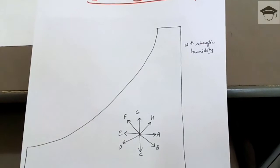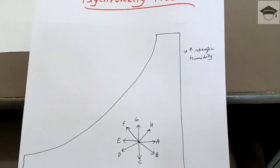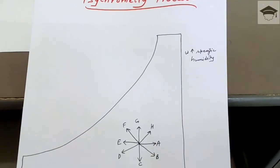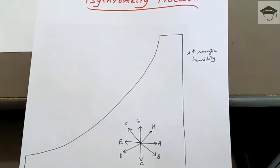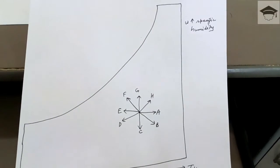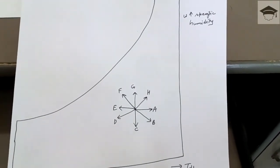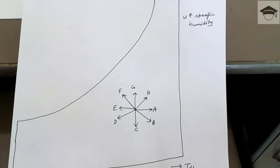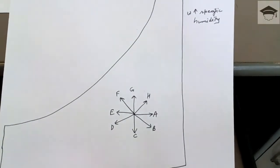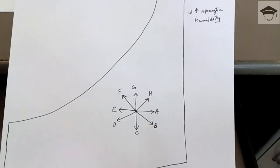Psychrometry processes are created by using an air washer — I will make a separate video regarding air washer. Now, this is a psychrometric chart. On the x-axis it is the dry bulb temperature, and on the y-axis it is the specific humidity.